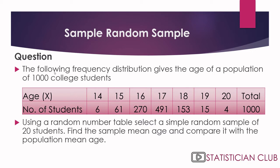Here is the question: The following frequency distribution gives the age of a population of 100 college students. At age 14 there are 6 students, at age 15 there are 61 students, and so on, up to age 20 with 4 students, making a total of 1000 students. Using a random number table, select a simple random sample of 20 students.